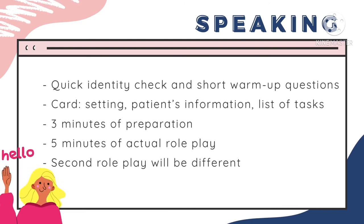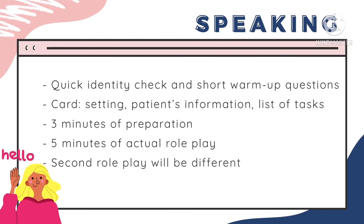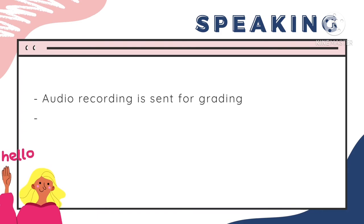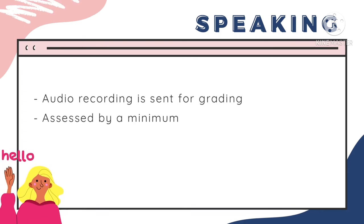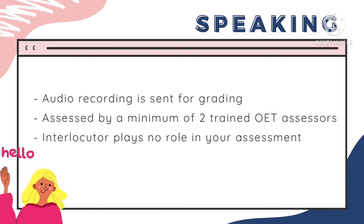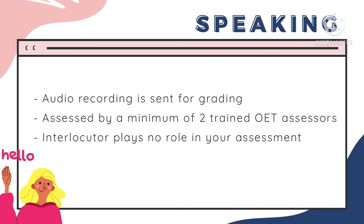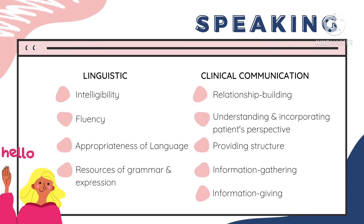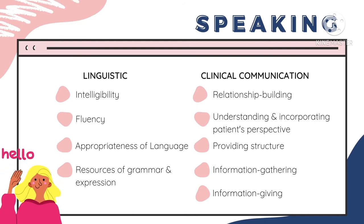Note that the second role play is usually in a different setting, different patient, and different set of tasks. The audio recording is then sent for grading by a minimum of two trained OET assessors. Hence, your interlocutor plays no role in the assessment of your performance. You will be assessed for two different categories: linguistic and clinical communication. Check the link below to know more about this.